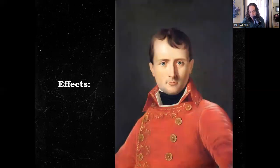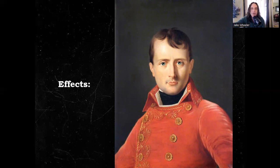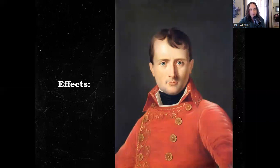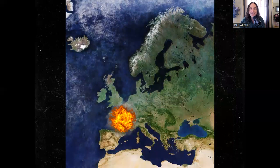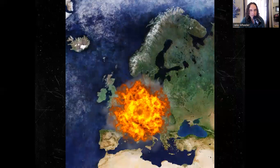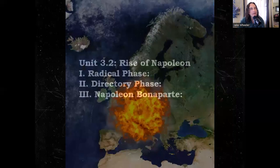This new constitution, rewritten by Napoleon, has the appearance of a republic, but in reality it establishes a military dictatorship. Julius Caesar would do the same thing — on paper it was a republic. Hitler would do the same thing — it had the appearance of a representative government, but in reality Napoleon is now a military dictator. And it will be Napoleon that spreads the ideals like a wildfire across Europe. That is for another lesson. Thank you all very, very much. Until we meet again.